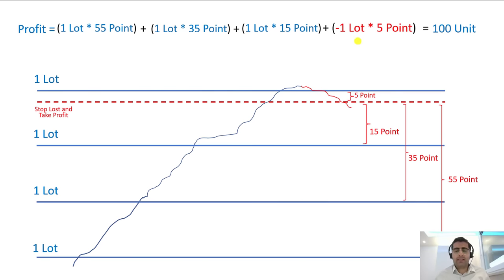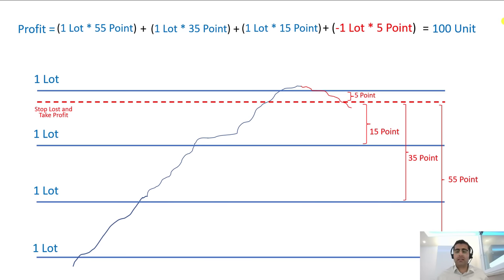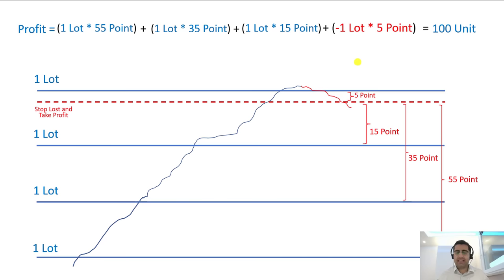In this case, we would need to be wrong on 10 other orders — hitting the stop loss on the next 10 orders — to lose all the money we gained here. Statistically speaking, this way of closing orders is very effective. I have worked with it a lot. In the next section I will teach you how to program this strategy, and in the last section we will test it using the strategy tester.